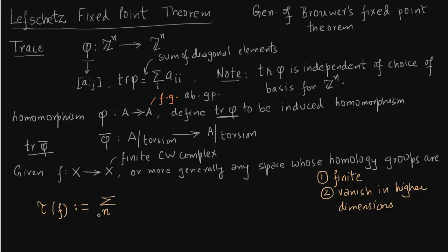Lefschetz number is like this, you take the sum over n and then you have the trace. Trace of f_star. This f_star is induced from the map f. We initially said that we wanted to define the trace of map f. The trace of map f actually comes in the form of f_star which is a homomorphism from one abelian group to another. If it is a finitely generated abelian group, then you need to take that finitely generated abelian group modulo torsion.